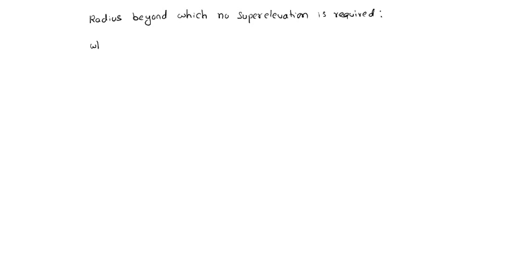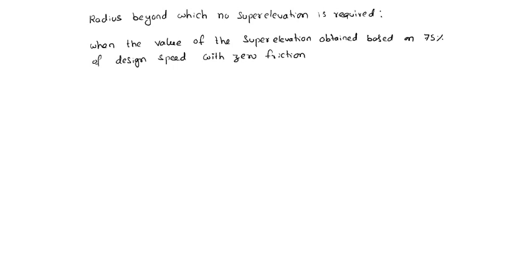When the value of the superelevation obtained based on 75% of design speed with zero friction is less than the road camber.